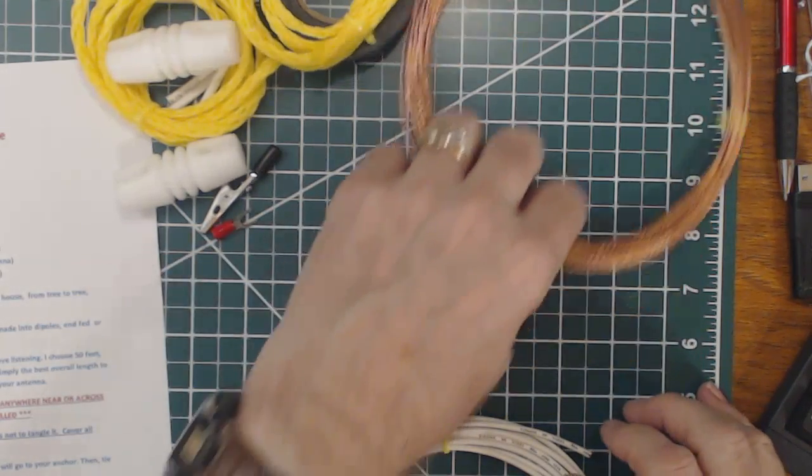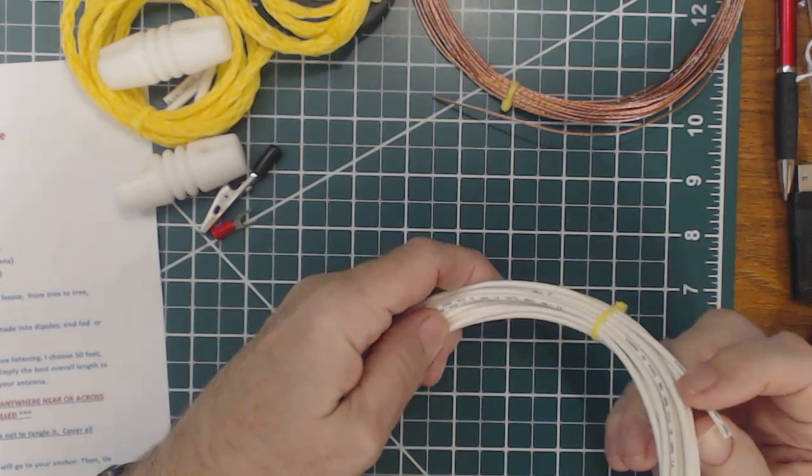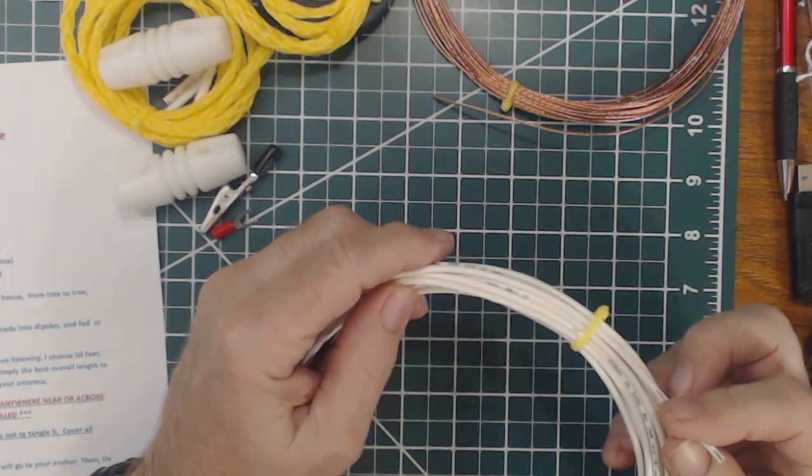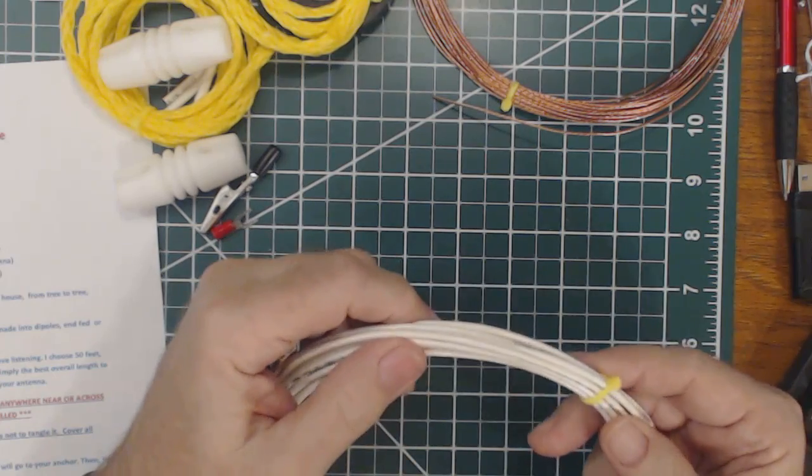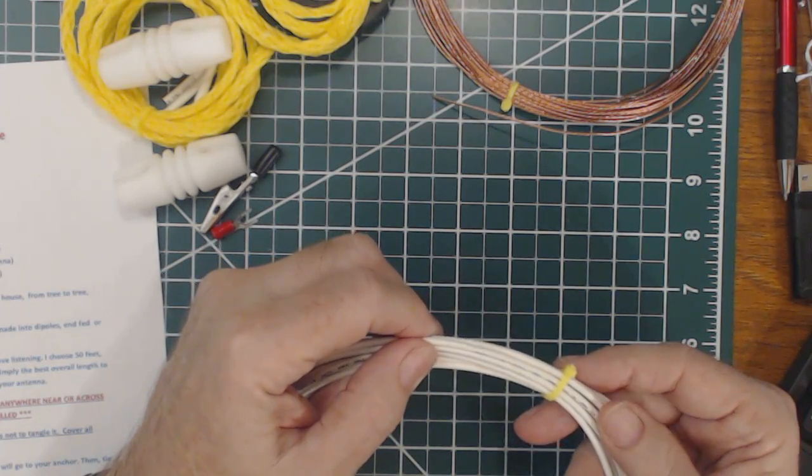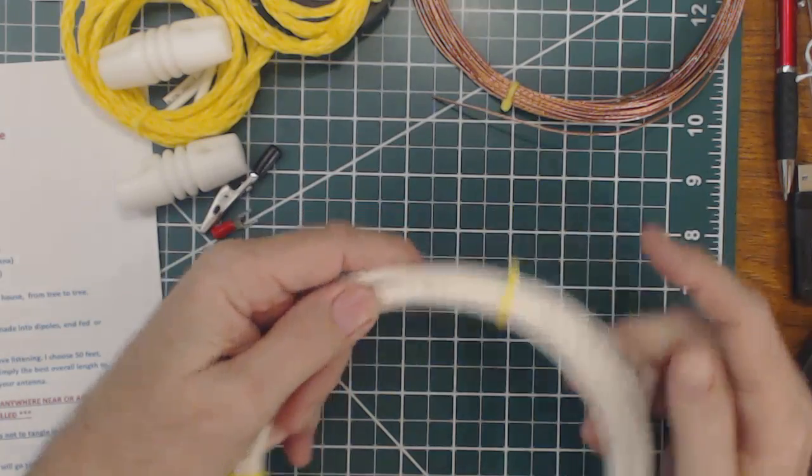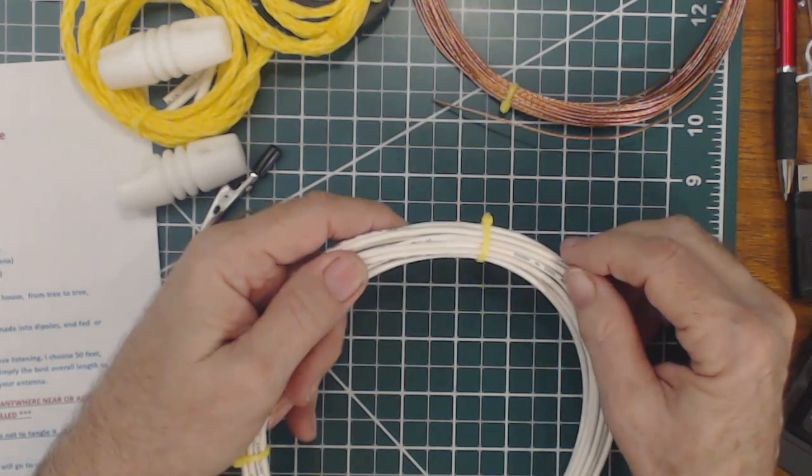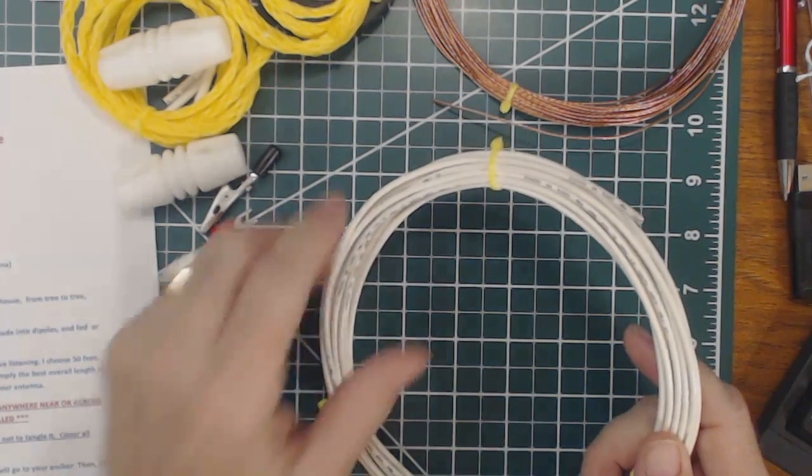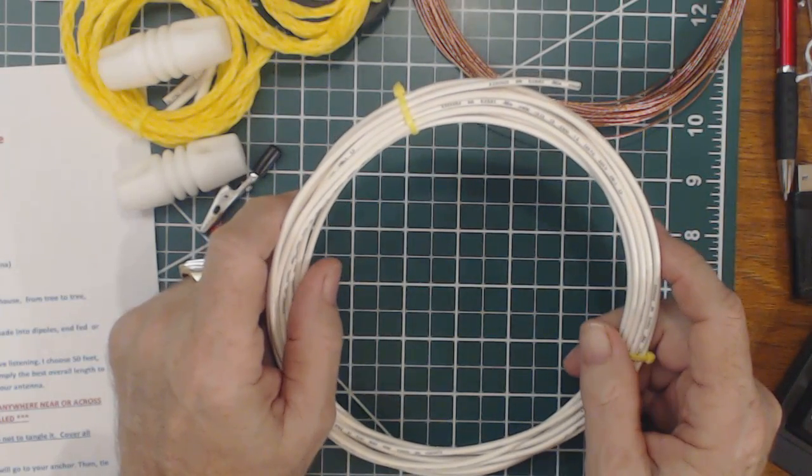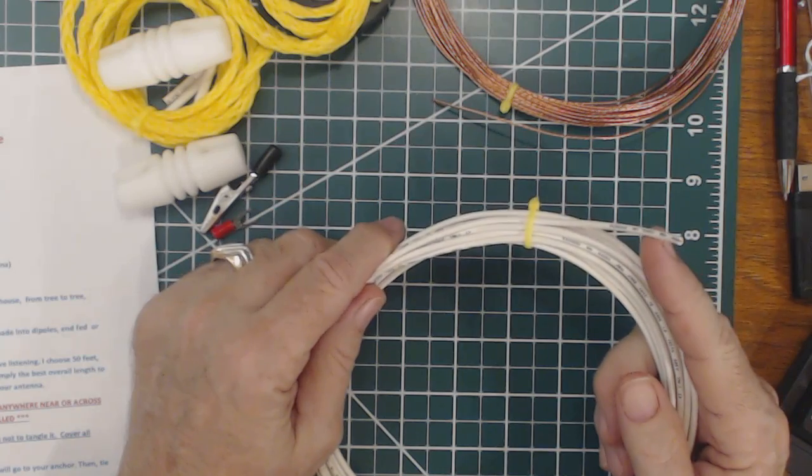Next is 25 feet of insulated wire. This is insulated wire - I think it's stranded. This is also 18 gauge. This is your lead-in wire. You attach this to the antenna on one end and then bring this into your house.